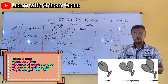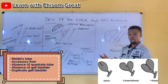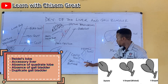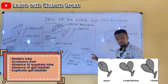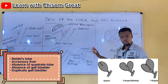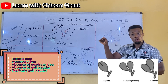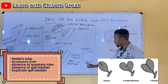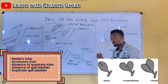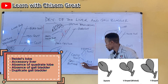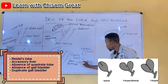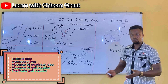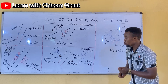Duplication of the gallbladder can be complete and it can be incomplete. Complete means the duplication is true — you have two gallbladders. Incomplete means you have one gallbladder, but there is a separation that is not totally complete.